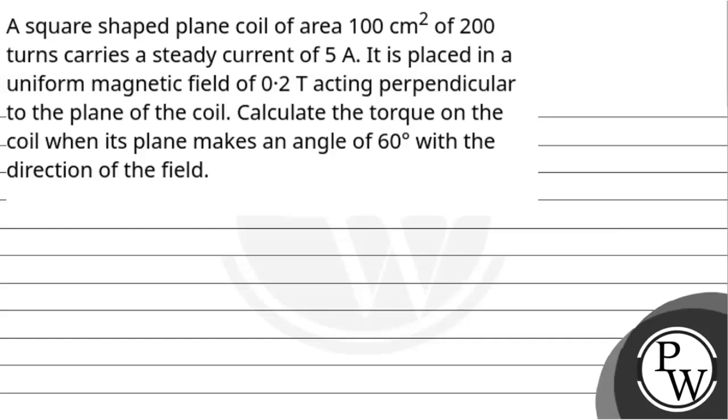Hello, let's hear out the questions. Question says, a square-shaped plane coil of area 100 cm² of 200 turns carries steady current of 5 ampere. It is placed in a uniform magnetic field of 0.2 tesla acting perpendicular to the plane of the coil. Calculate the torque on the coil when its plane makes an angle of 60 degree with direction of the field.